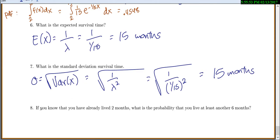And number 8 says, if you know that you've already lived 2 months, what is the probability that you live at least another 6 months? So that if tells me we're working with a conditional probability. So we're saying, if you know you've already lived 2 months. Then what's the probability you live at least another 6 months? So probability that x is greater than or equal to 6. So again, this is our conditional probability.